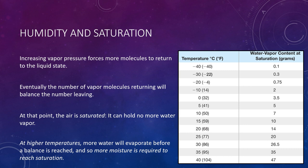However, if we add heat to the container, increasing the temperature of the water and air, more water will evaporate before a balance is reached. Consequently, at higher temperatures, more moisture is required to reach saturation. The chart shows that as temperatures increase — temperature in Celsius on the left, Fahrenheit on the right — the water vapor content at saturation also increases. For example, at 14 degrees Fahrenheit we only need 2 grams of water vapor to reach saturation, but at 104 degrees Fahrenheit we need 47 grams of water vapor to reach the same level of saturation.